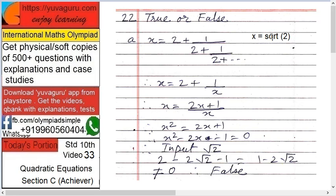So now input... sorry, we have to check if x equals √2 or not. That's the question, not 0. So true or false: x equals √2.